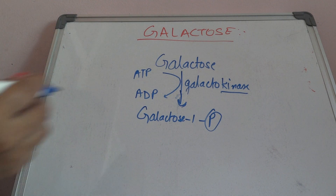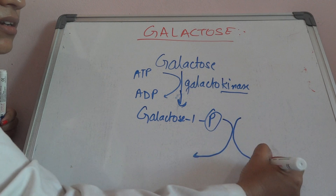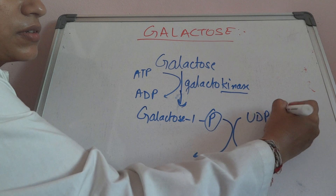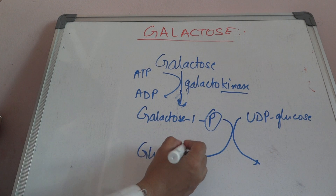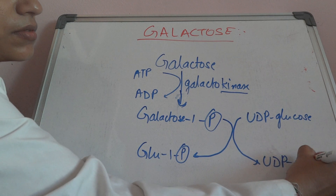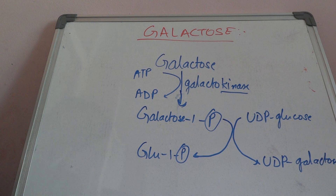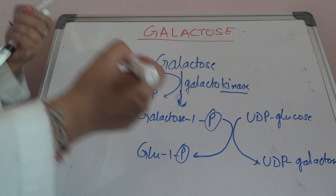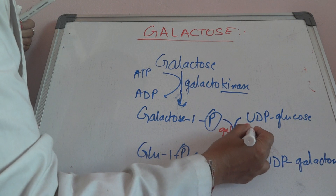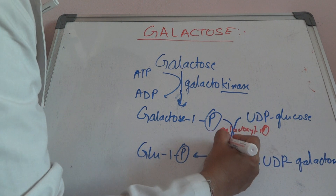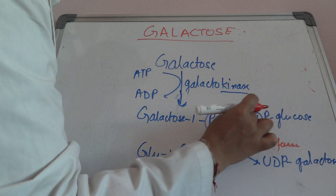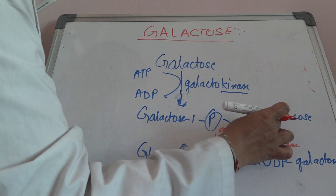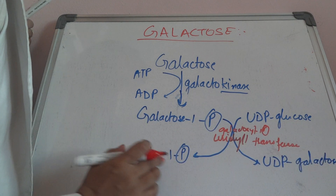This galactose-1-phosphate will react with UDP glucose. The enzyme here is galactose-1-phosphate uridyl transferase — it is called uridyl transferase because UDP (uridyl diphosphate) is transferred to galactose forming UDP galactose. In turn, glucose-1-phosphate is formed.